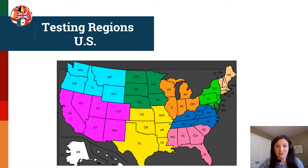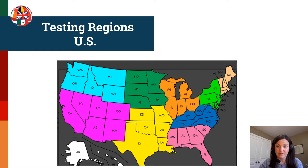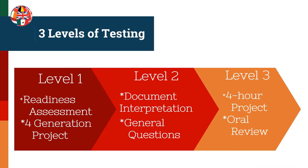There are currently nine different regions in the US, the most common area to become accredited. These regions are formed because they have similar types of records and a similar history. For example, in the Gulf South there were many records lost due to wars and natural disasters — what people call 'burned out counties' — so you have to learn different strategies and become proficient with the records that do exist and the workarounds for that area.